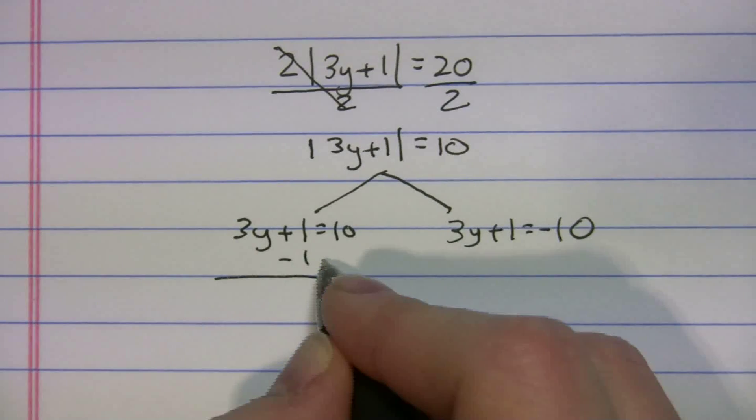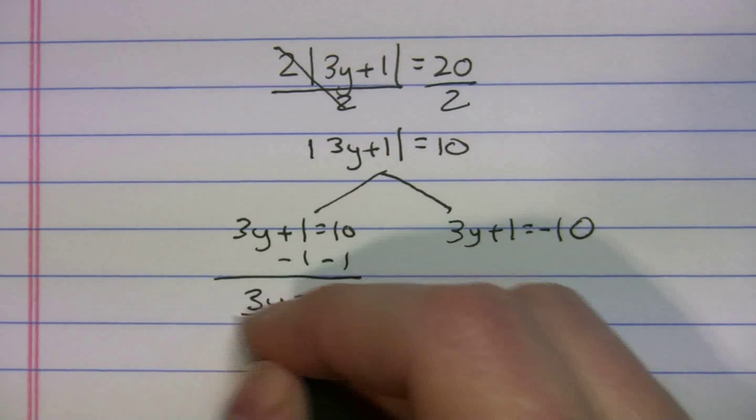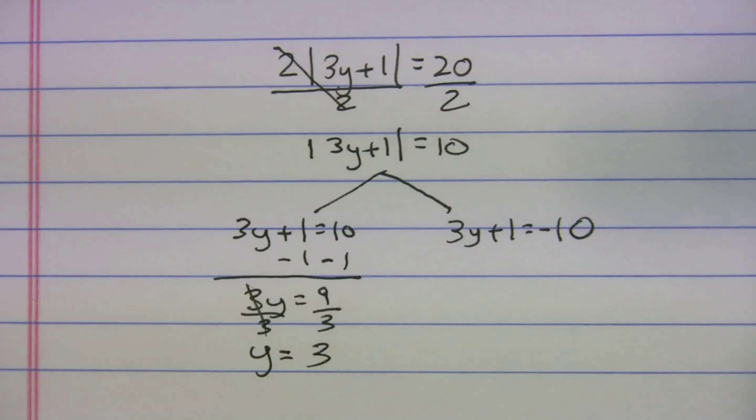Minus 1, minus 1. 3y is equal to 9. Divide by 3, divide by 3. And we get y is equal to 3.